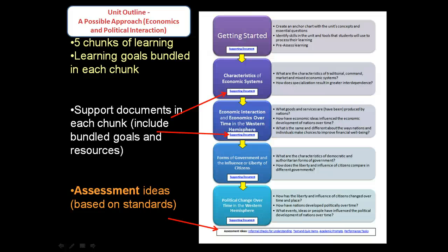To support teachers in figuring out how to approach this unit, a document has been created with the title Unit Outline: A Possible Approach, Economics and Political Interaction. This document lives among the Stage 3 support documents. This outline bundles together different Stage 1 learning goals to offer a possible approach for how teaching and learning might flow throughout the course of the unit.